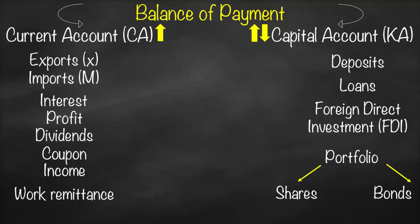Loans are two-way transactions and go under capital account. Financial grants or aid given to a country after a natural disaster do not need to be repaid, so grants are one-way transactions reported under current account. To summarize the criterion: one-way transactions are reported under current account; two-way transactions are reported under capital account.